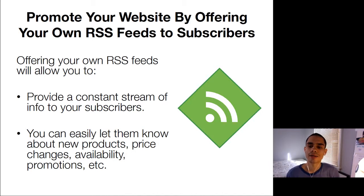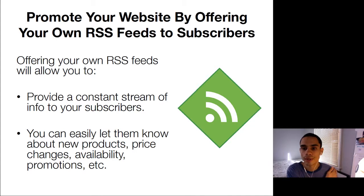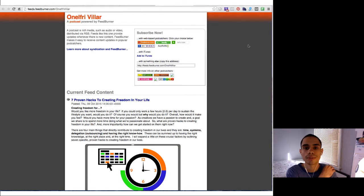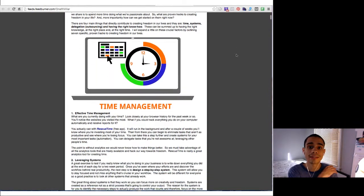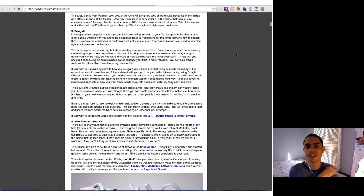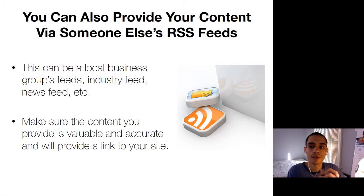Choose from a variety of RSS aggregators to build your feed and offer it to your customers. One I use is called FeedBurner, as I already mentioned. The great thing about RSS feeds is that they don't require too many resources from a computer or from your internet provider — it's very much like a simplified version of your website, so it loads a lot faster for those who really have to pay for every last bit of data transferred to their phone. A second way is to provide your content via someone else's RSS feed, such as an existing local business group's feed, an industry feed, a news feed, or any other feed that will accept your content.